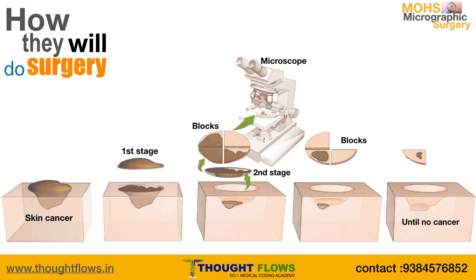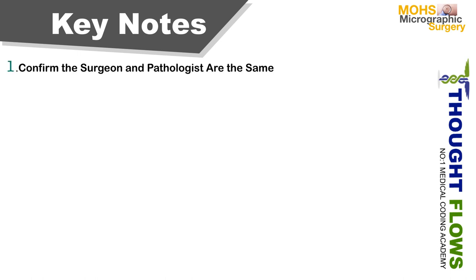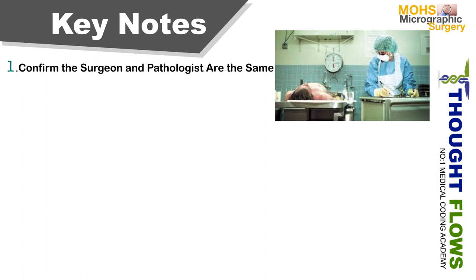Now we will see the key points needed for coding purposes. First, confirm that the surgeon and pathologist are the same — in Mohs surgery, the surgeon should also act as the pathologist, in order to reduce time and remove 100% of cancerous cells efficiently. Next, identify the location — check for the location of the surgery, because there are different code classifications based on anatomical site in the CPT book, such as face, leg, hand, etc.